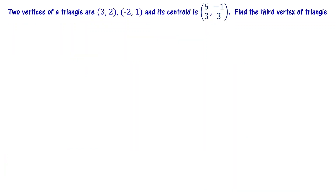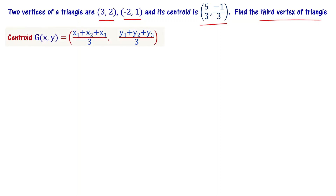Let us solve the second problem now. Two vertices of a triangle are given as 3 comma 2 and minus 2 comma 1, and the centroid of the triangle is 5 by 3 comma minus 1 by 3. We are asked to find the third vertex of the triangle. Using the centroid formula: x comma y equals x1 plus x2 plus x3 divided by 3, comma y1 plus y2 plus y3 divided by 3.